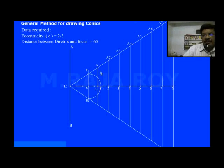After drawing perpendiculars, call these intersection points as A1, A2, A3, and so on up to A8.